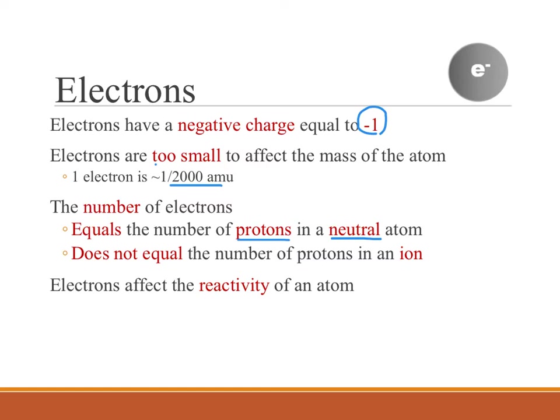But the number of electrons will not equal the number of protons if you have an ion. If you have a charged particle, there is an unequal number of electrons to protons, and depending upon which way it is going, you end up with a positive or negatively charged ion.